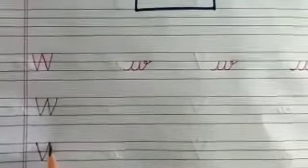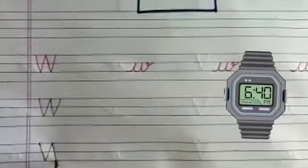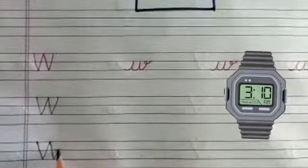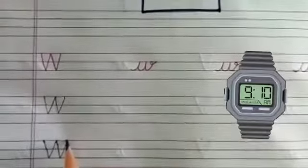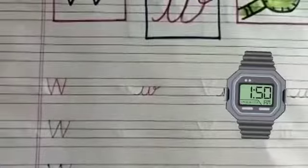Again, come down and make a slanting line. Touch lower blue line. And go up. Touch red upper line. W. W for watch.